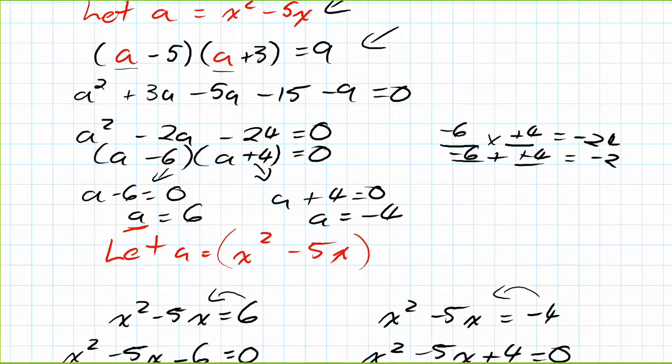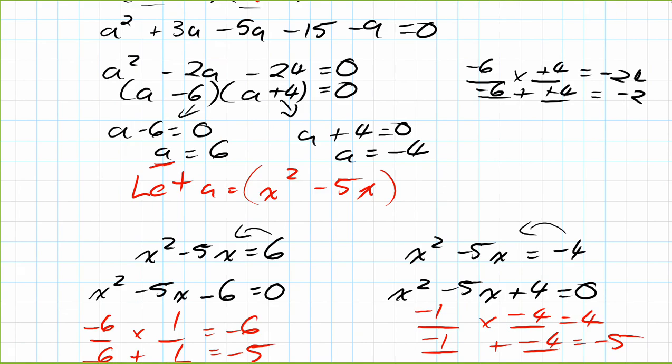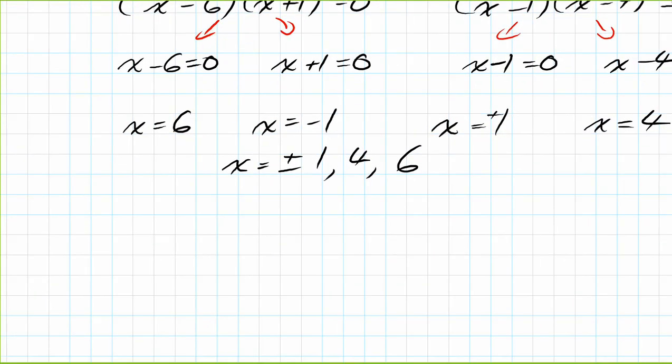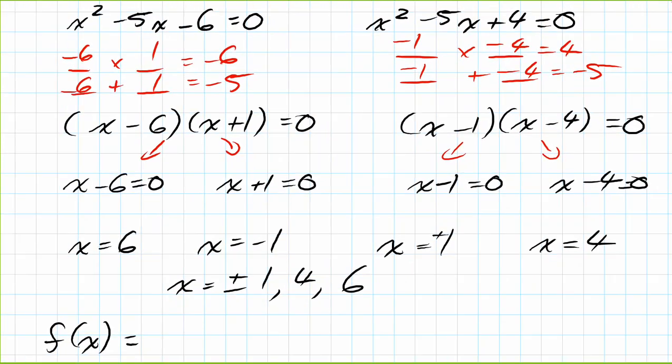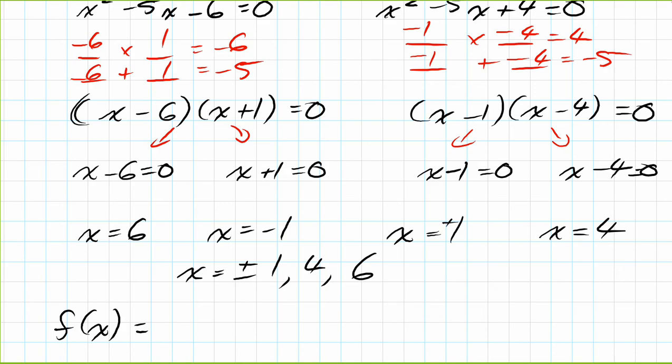We can also rewrite the original function in function notation. What we could actually do, because remember we split it, we just put all of these sets of binomials together. We could say f(x) = (x - 6)(x + 1)(x - 1)(x - 4). That actually is the exact same as the value we wrote or we started with in this question.